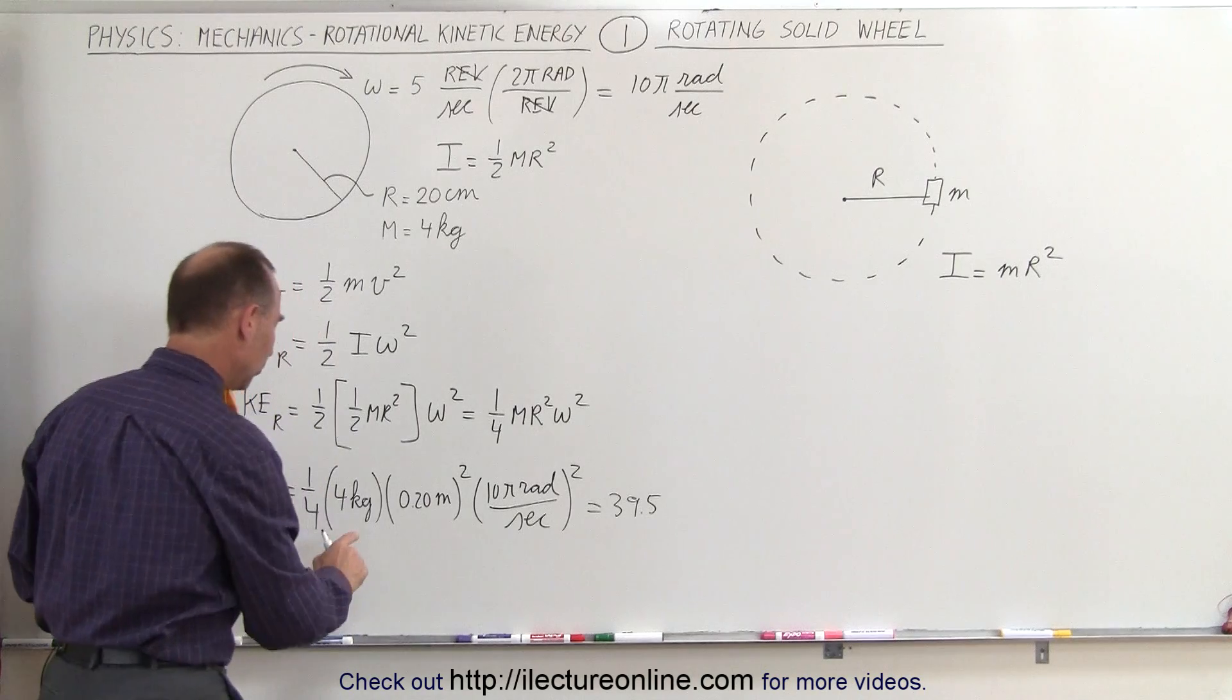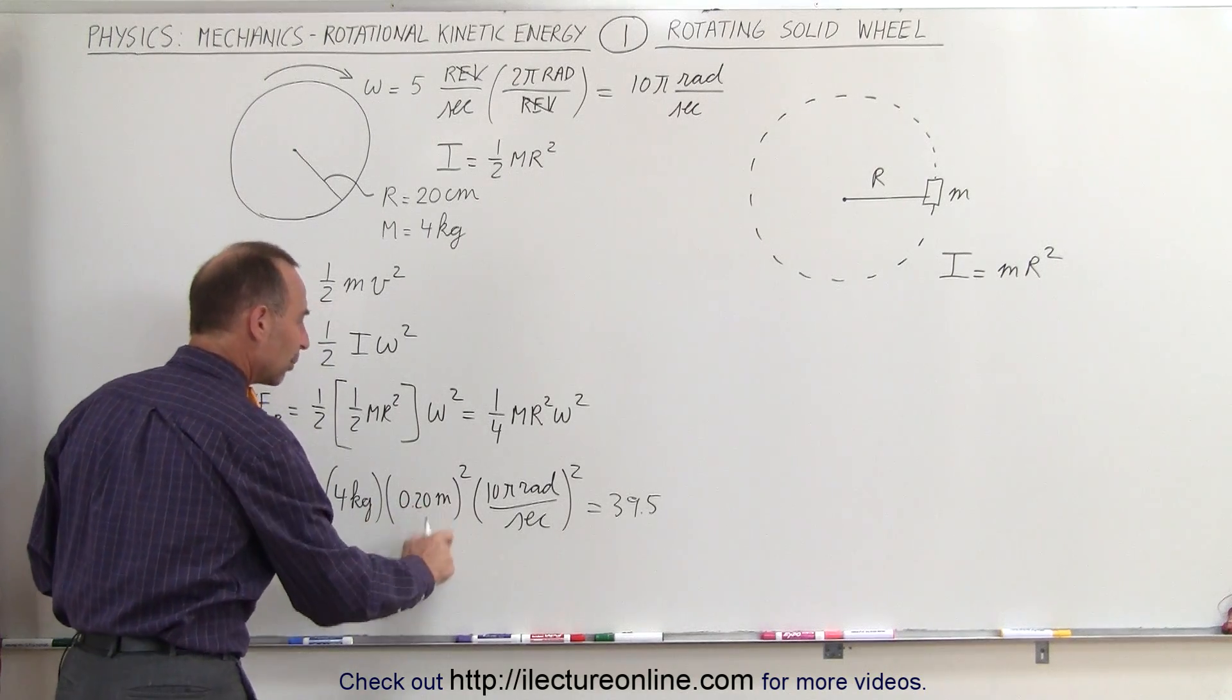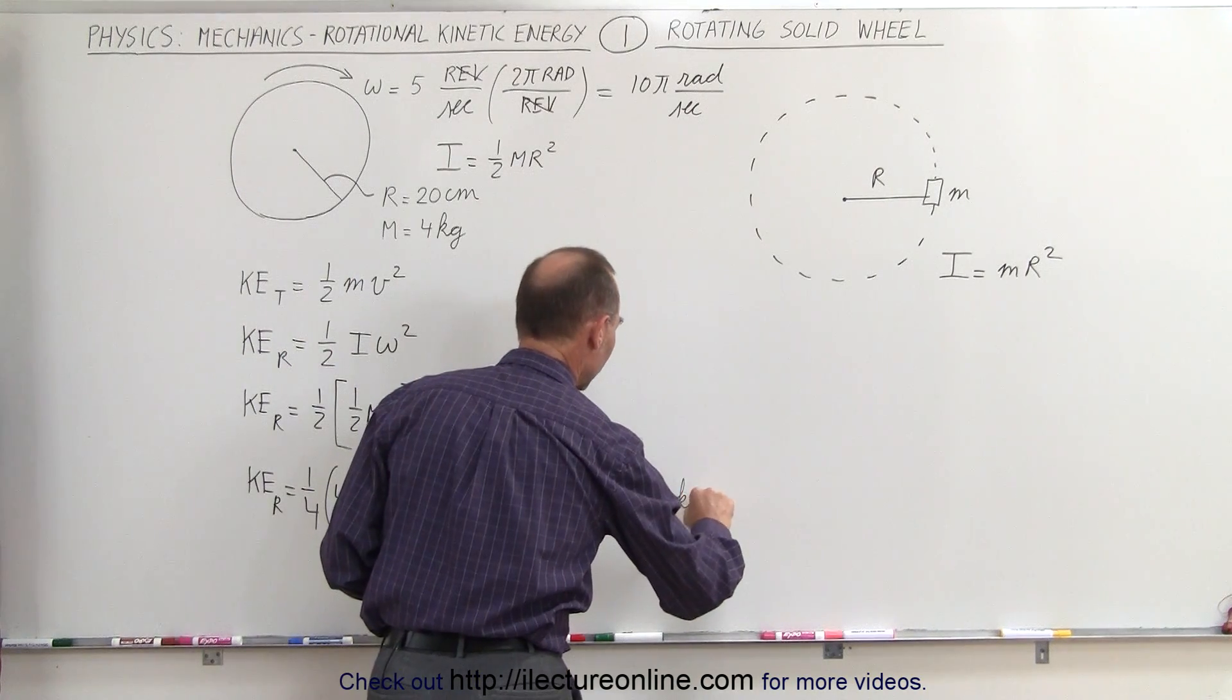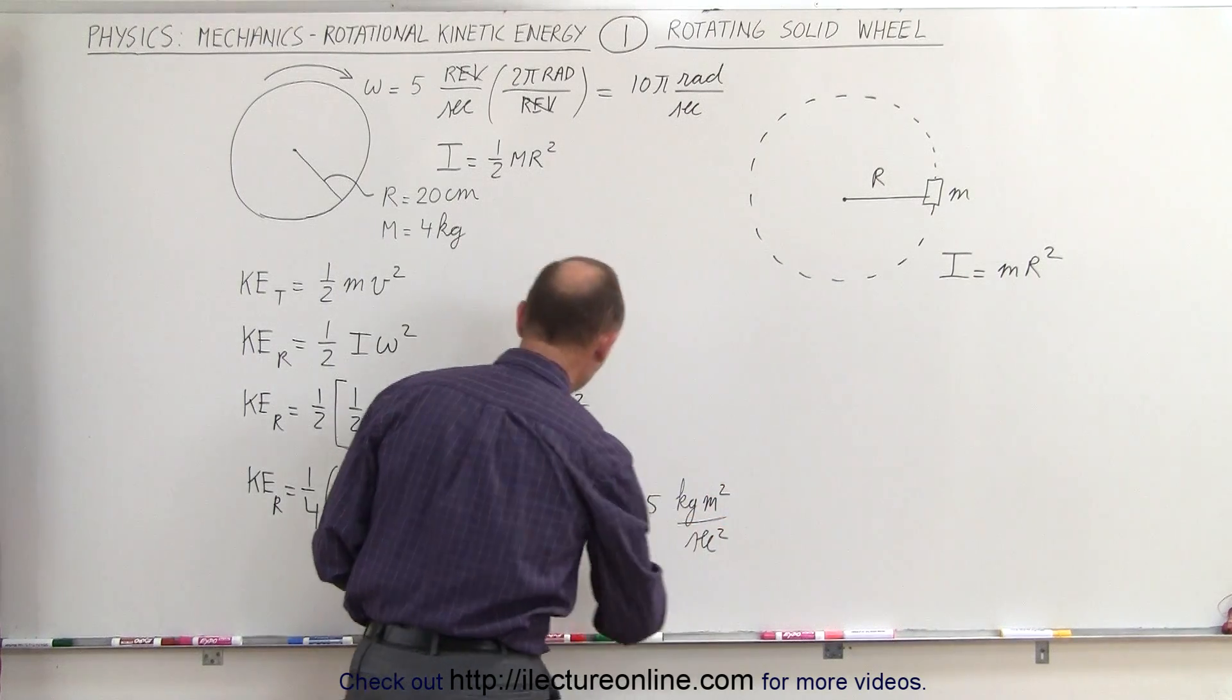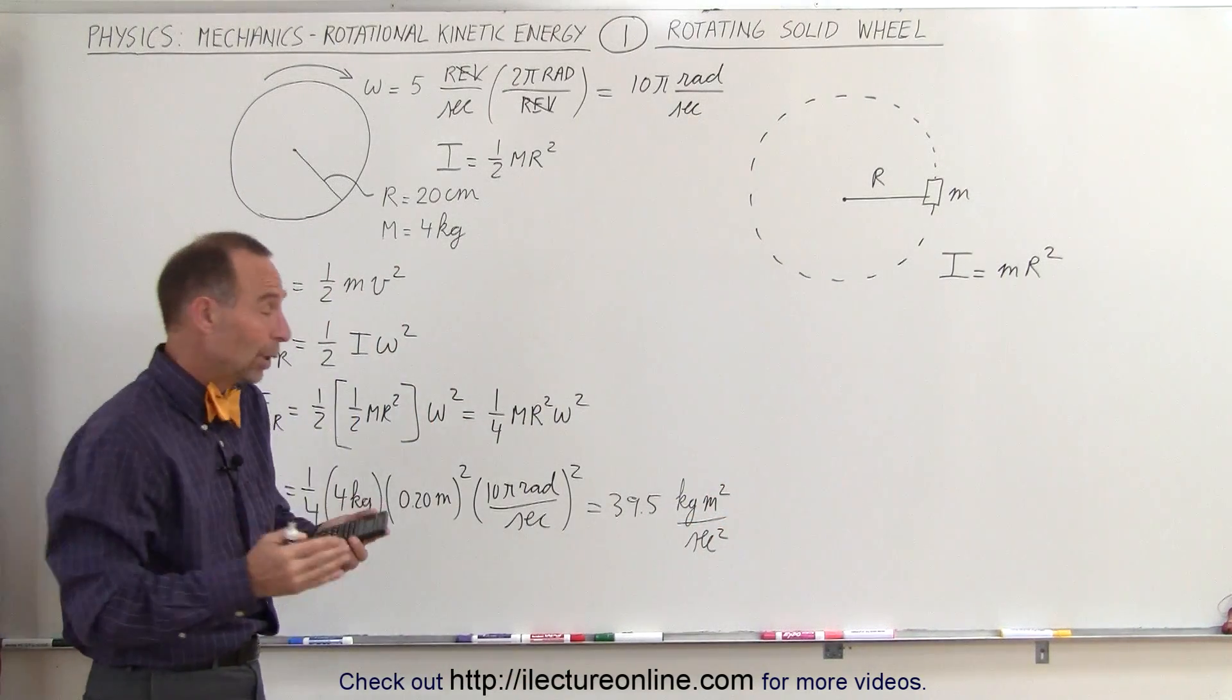And notice we get kilograms meters squared per second squared. We don't have to write radians squared because radians is really a non-unit.